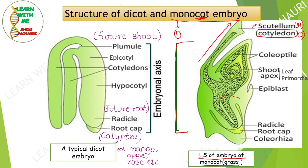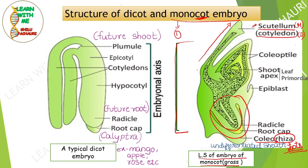On the lower side of the embryonal axis, there is an undifferentiated sheath structure called the coleorhiza. The term 'rhiza' here stands for rhizoids, meaning anything related to roots. The coleorhiza is the portion where the radicles and root caps are present, and these radicles and root caps develop into the future roots.